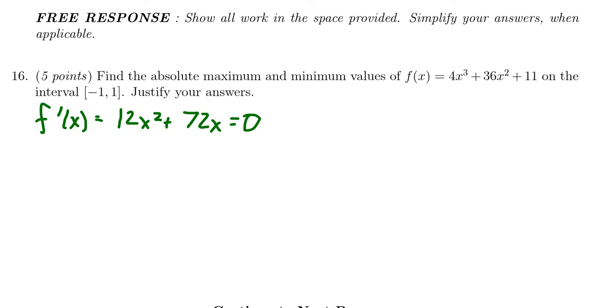Factoring out the greatest common divisor, there's a common factor amongst the coefficients of 12. We can also factor out x, so the GCD is going to be 12x. That leaves behind an x + 6 = 0.